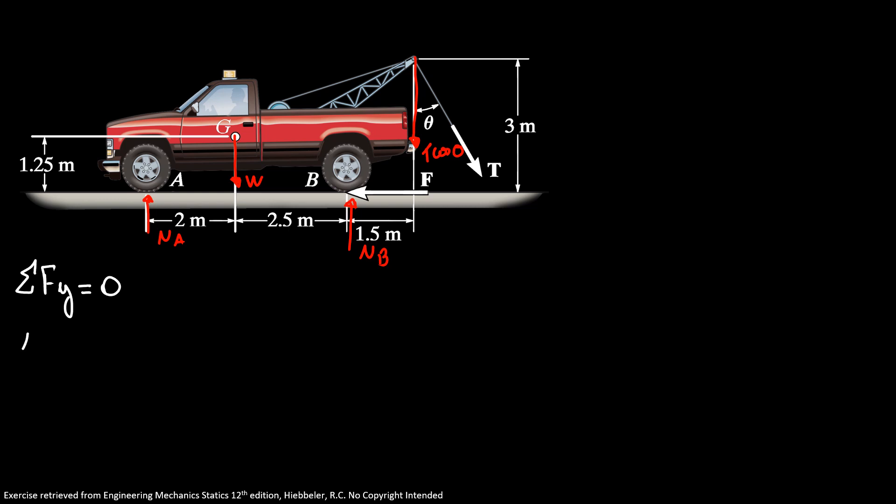So here I have normal A plus normal B minus weight minus T cosine of theta equals 0. So my normal A equals weight 39.2 plus 6 cosine of 60 minus 24.9. So our normal force in A is equal 17.3 kN.